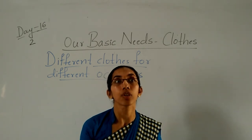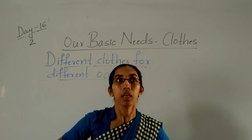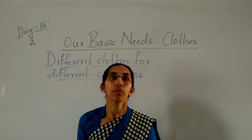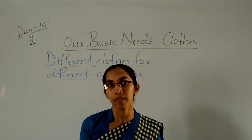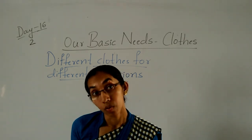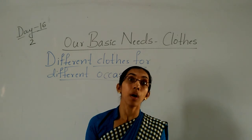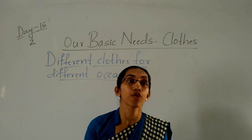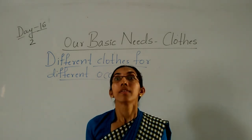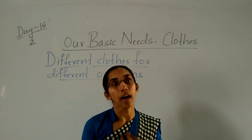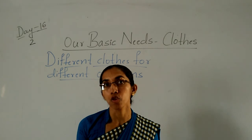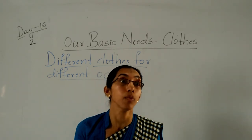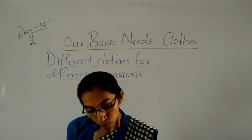For school you will wear the uniform: shirt, half pant, skirt, tie, belt, hairband, ribbon, shoes, socks — the complete uniform you will wear to school. Your uniform is a cream color shirt and a brown color pant or skirt, with one tie, one belt, black shoes, and white and brown color socks.